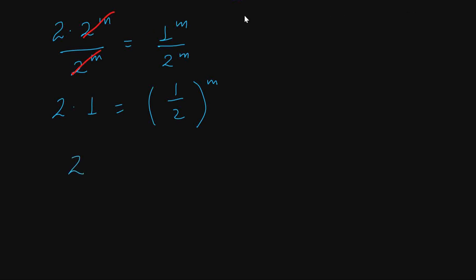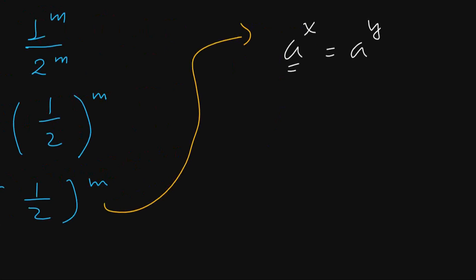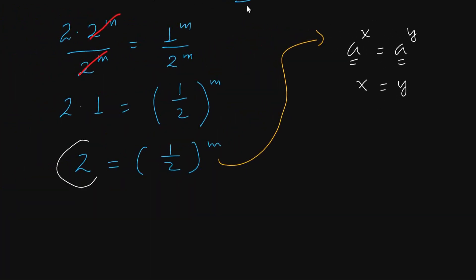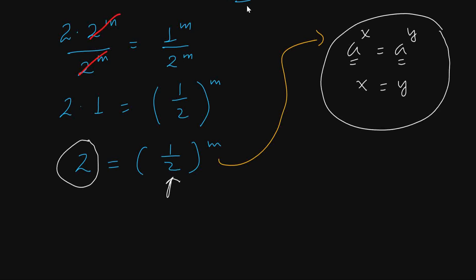So the left side becomes 2 times 1, which equals 2. The right side gives us the exponent, and since the base is different, we write the equation as 1 over 2 to the power of m, which is 1 divided by 2 to the power of m. By the exponent rule, we change this expression accordingly. So now the right side is 1 over 2 to the power of m.